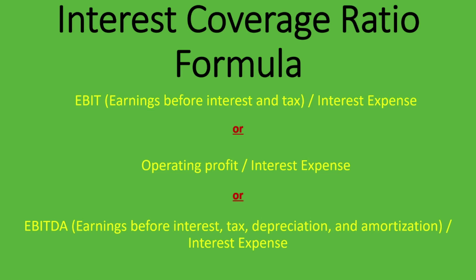We use EBIT because it's before the interest expense, so we can see how many times we're able to pay that interest expense. A common question is whether EBIT includes interest income — yes, it does. The only things EBIT excludes are interest expense and taxation. As for operating profit versus EBIT: operating profit is your profit from operations, while EBIT also takes into account other sources of income, like interest income.